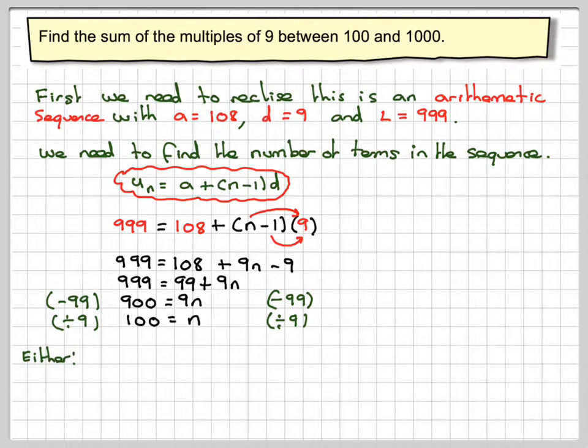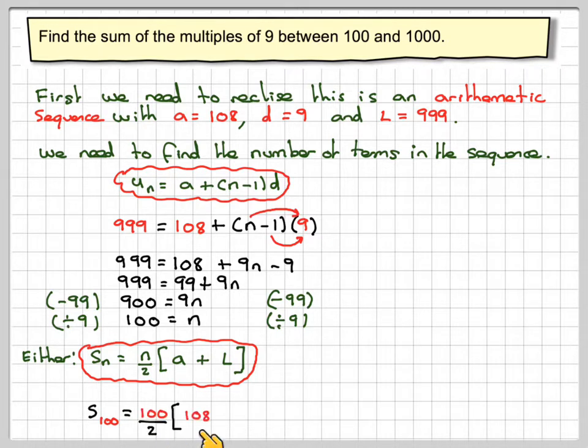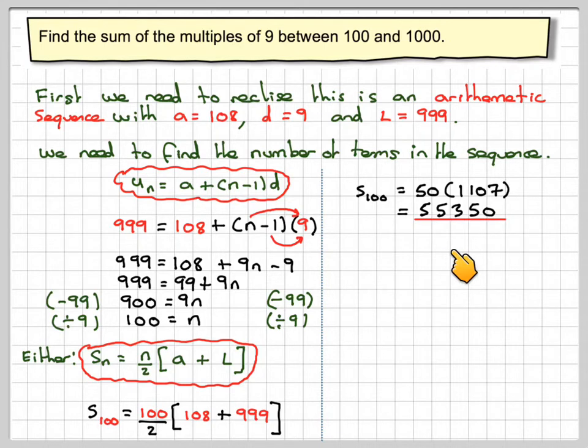So we've got two ways of proceeding now. Either we use this formula, which is probably the easier of the two. Sn is n over 2, a plus l. Substituting in, s of 100 is going to be 100 over 2, plus 108, plus the last term, which is 999. And that's going to give s of 100 of 50 times 1,107, which gives me 55,350.